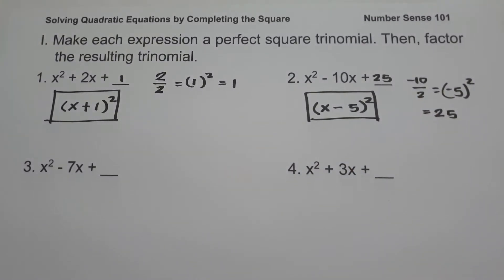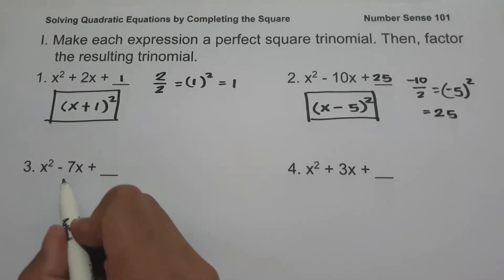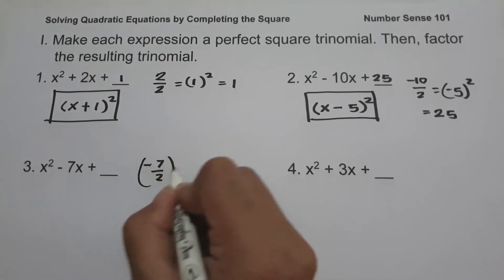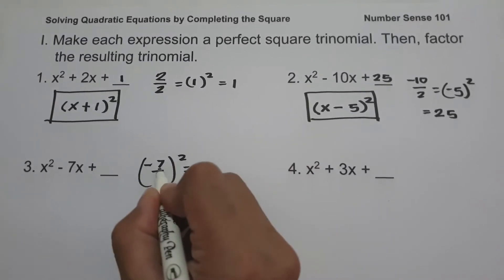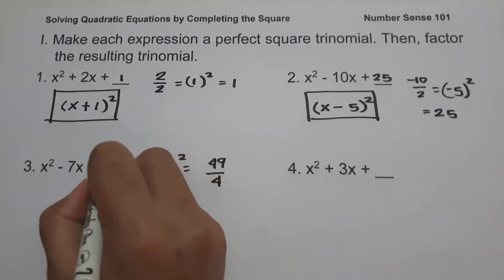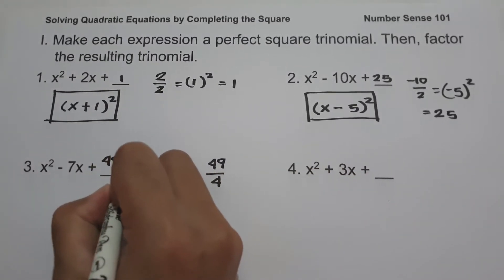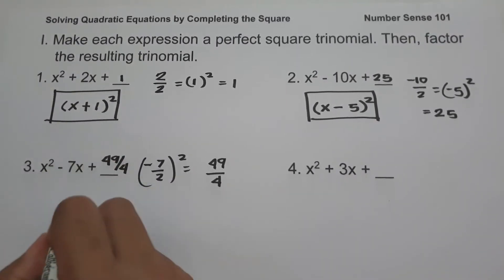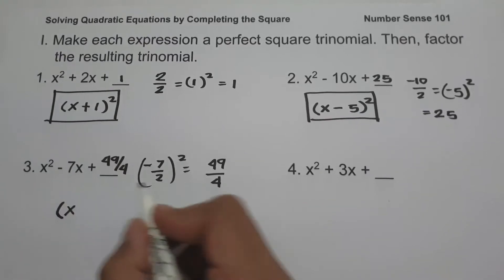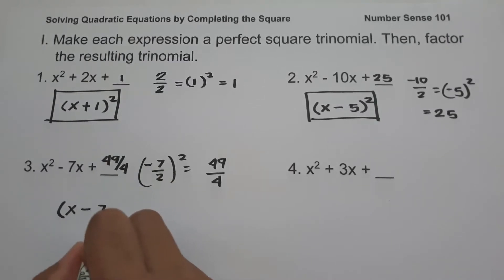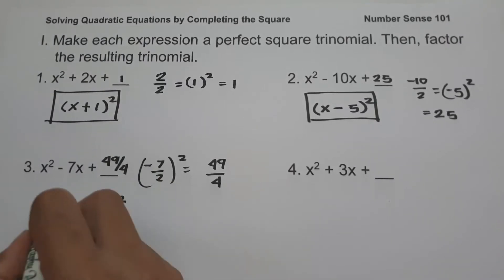On number 3, we have x squared minus 7x plus blank. The coefficient of the middle term is negative 7, so this will be negative 7 divided by 2. Let us square this: negative 7 squared is 49, and 2 squared is 4. So we're going to add 49 over 4 to make this expression a perfect square trinomial. The factor is x minus 7 over 2, and then square. And this will be our answer.